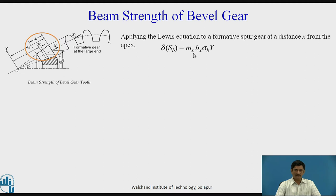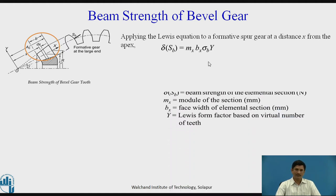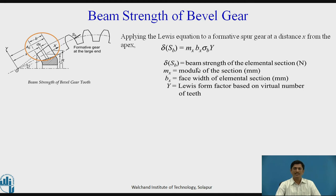Applying the Lewis equation to a formative spur gear at distance x from the apex, this elemental zone which is at distance x from the center with radius Rx and width dx: delta Sb equals Mx Bx sigma V into Y. These parameters are: delta Sb is the elemental beam strength or the beam strength of the elemental section, always expressed in Newton. Mx is the module of the section in millimeter. Bx is the face width of the elemental section.